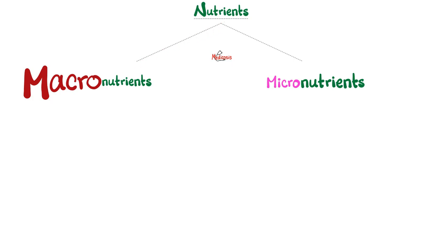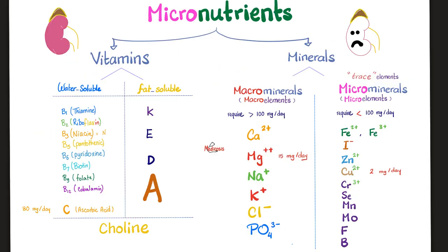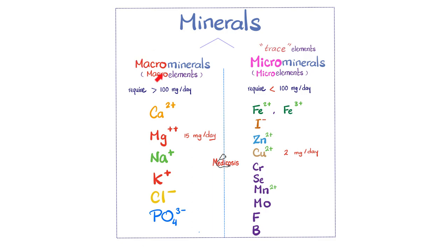Nutrients are either macronutrients or micronutrients. The macronutrients are carbohydrates, proteins, and fat, consumed in grams per day. The micronutrients are vitamins or minerals, in milligrams per day. Vitamins are water-soluble or fat-soluble. The minerals are macrominerals or microminerals. Macrominerals generally are required in more than 100 milligrams per day, while microminerals are usually less than 100 — that's why we call them trace elements. The macrominerals include calcium, magnesium, sodium, potassium, chloride, and phosphate.